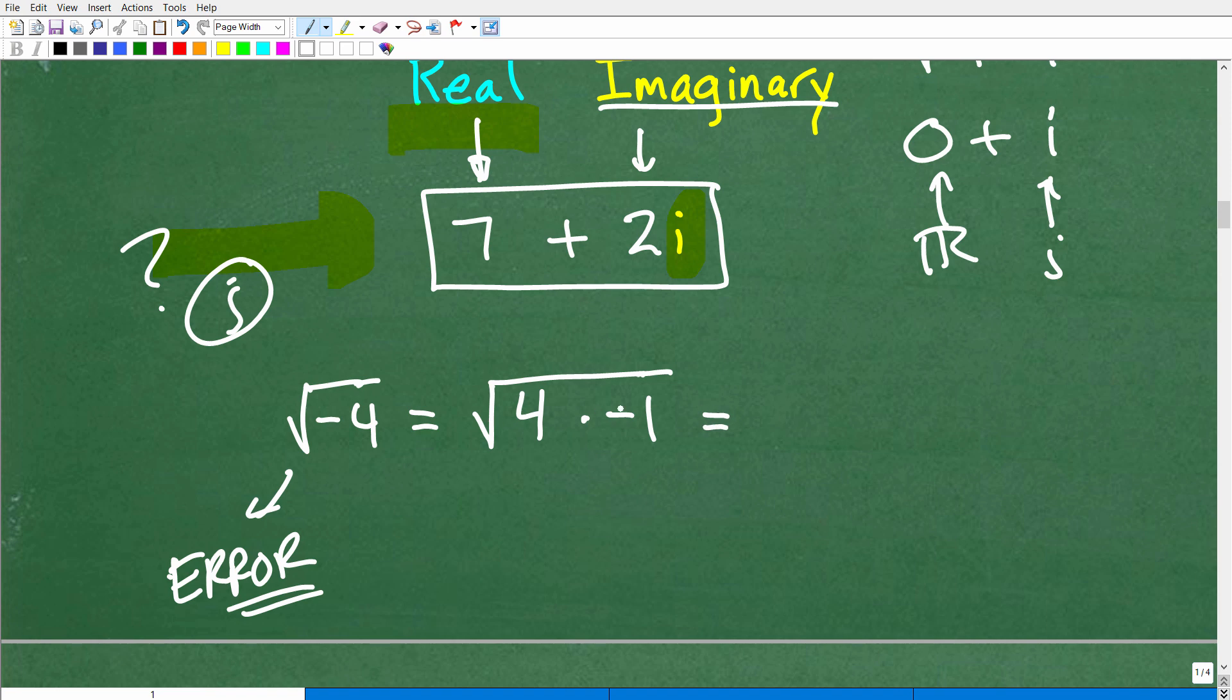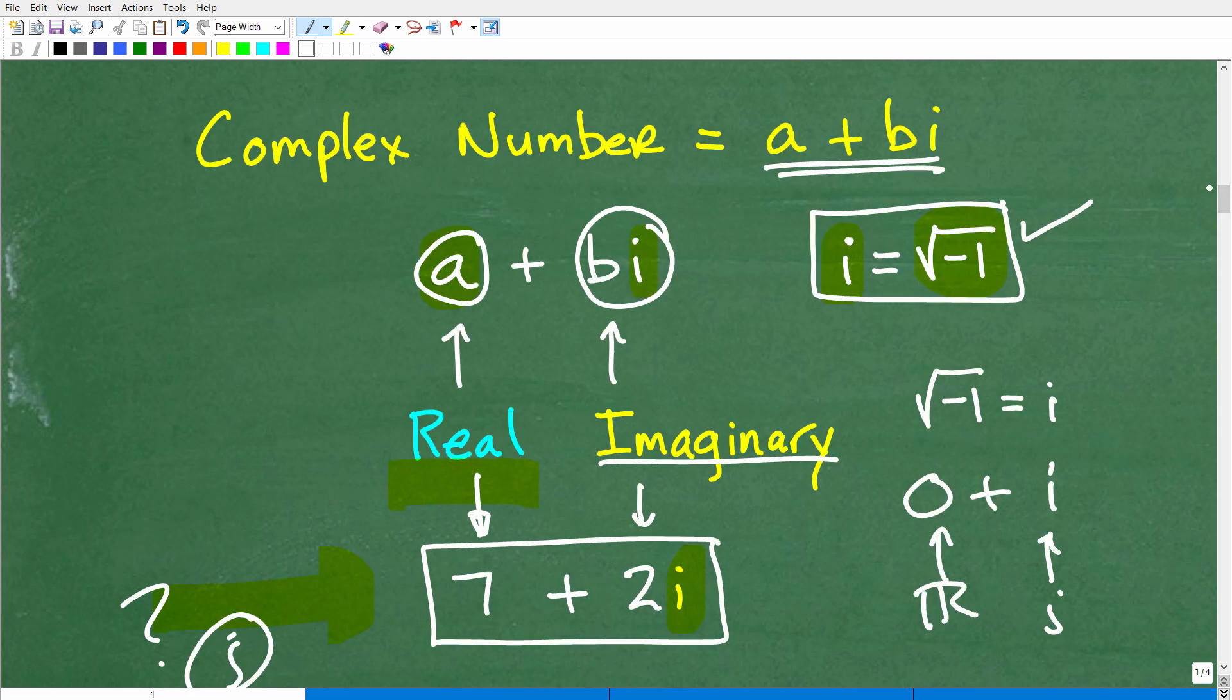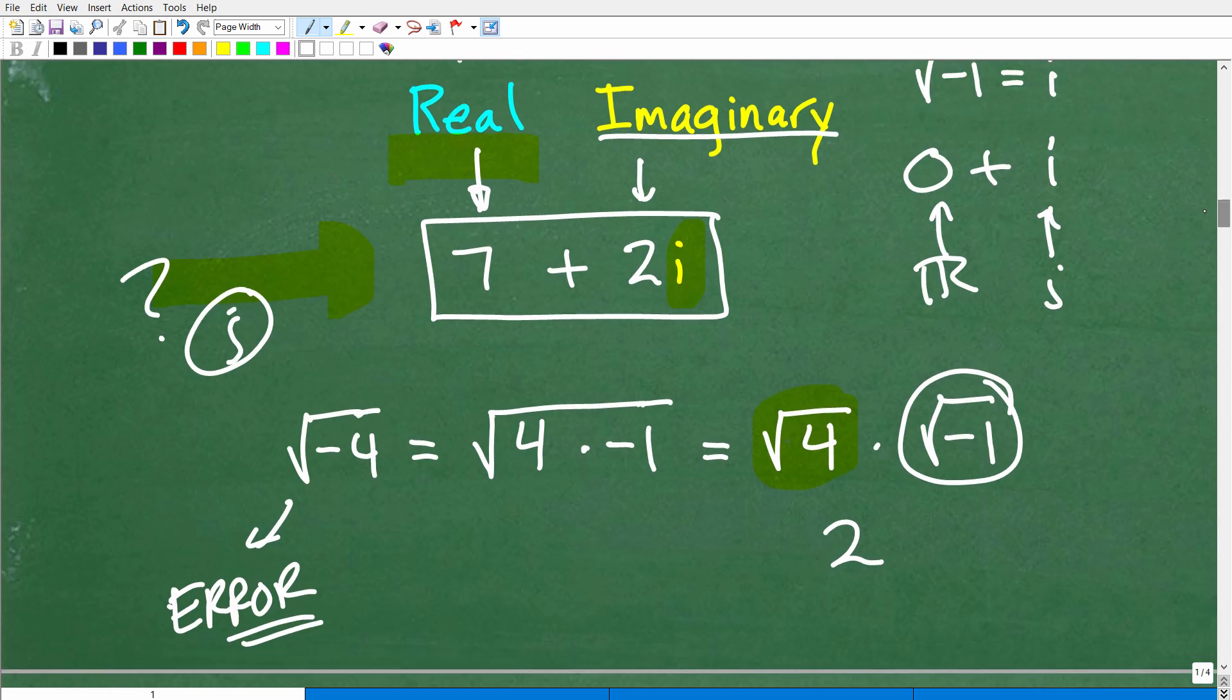Now we have a property of square roots that can basically pull this one big square root into two separate square roots of the factors here, so that would be square root of four times the square root of negative one. Okay, so what is the square root of four? We'll just take the principal square root, the positive answer. That would be two. And what is the square root of negative one? Well, again, by definition, the square root of negative one is i. Okay? So the answer here would be 2i.